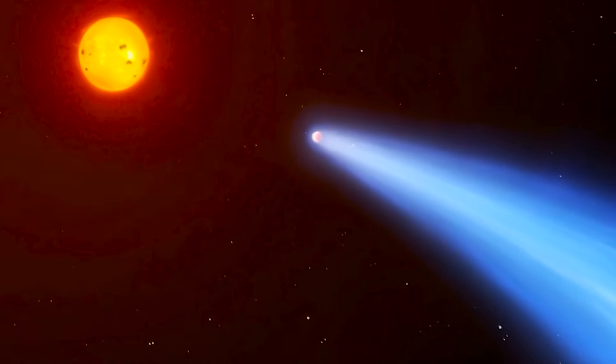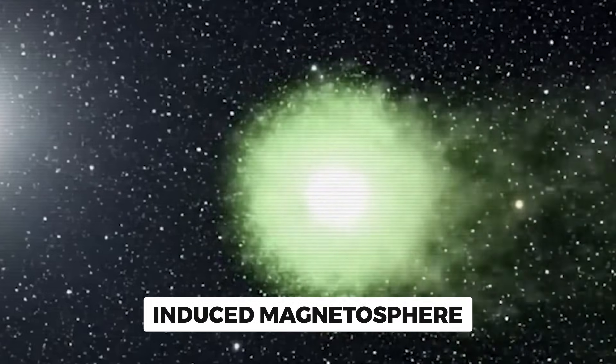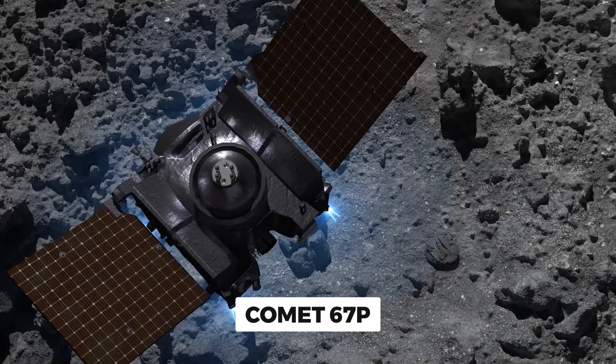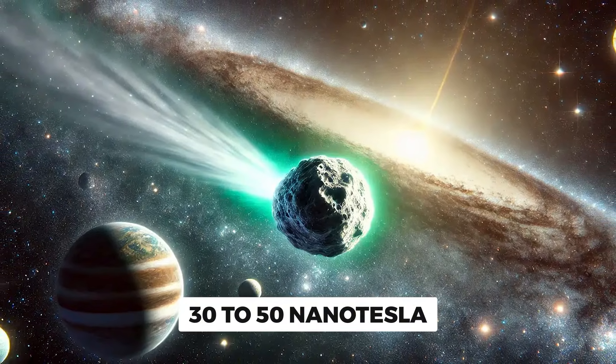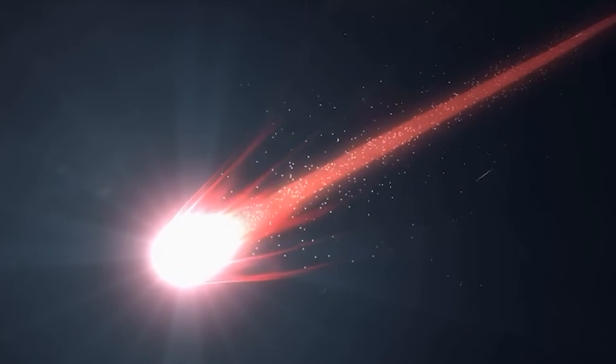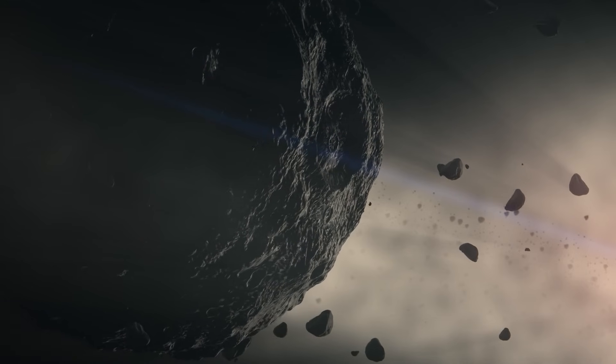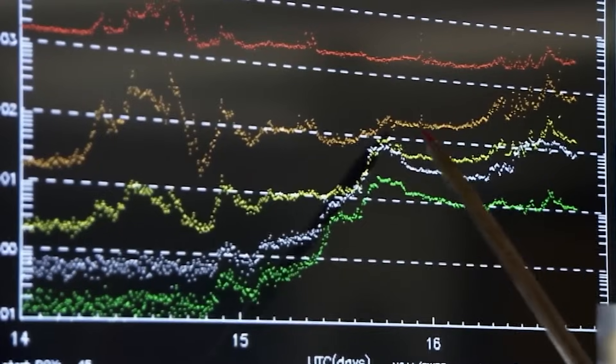This is on top of the magnetic field it already has from its ionized plasma coma. When solar wind particles interact with the gas around a comet, they create what's called an induced magnetosphere. The Rosetta mission, which studied Comet 67P up close, measured magnetic field strengths of 30 to 50 nanotesla under normal conditions. When a solar storm hit that comet, the field strength jumped to 300 nanotesla. Now add internal magnetite deposits to that equation, and you've got a significantly enhanced magnetic shield.